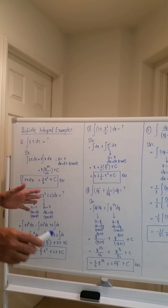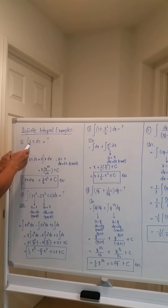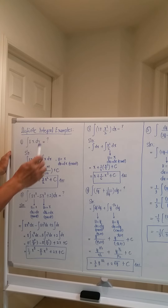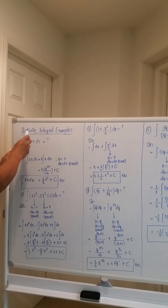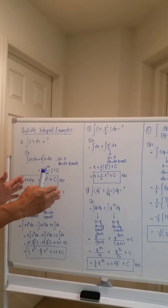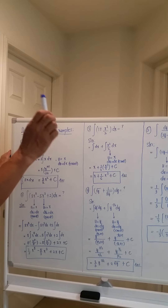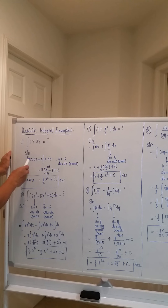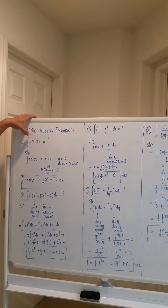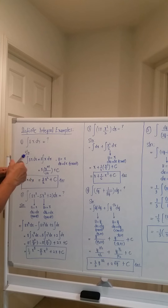Number one: the integral of 5x dx. What will be the value? We are given the integral problem — the integral of 5x dx — and we need to find the answer, meaning what will be the function after integration, or what will be the equation. Let's proceed with the solution. The integral of 5x dx: here, 5 is a constant and x is a variable.